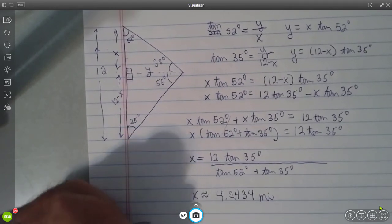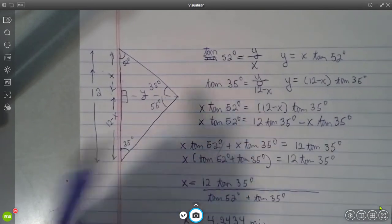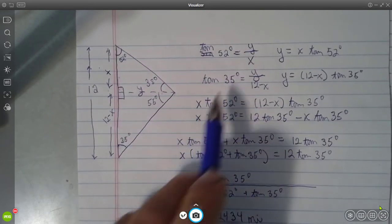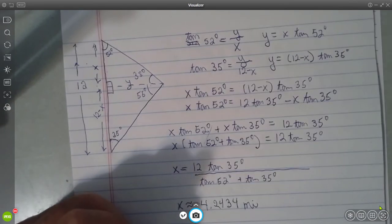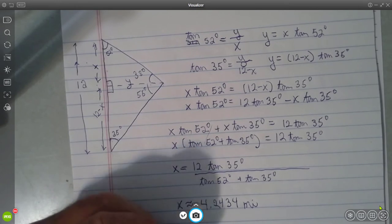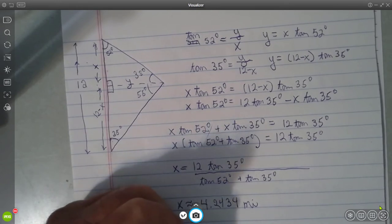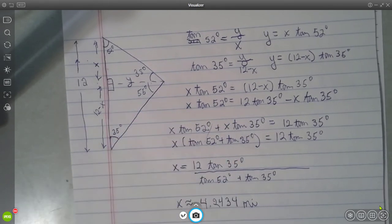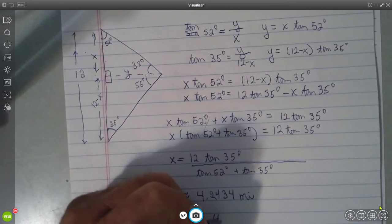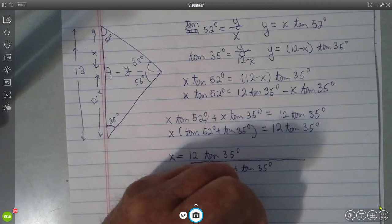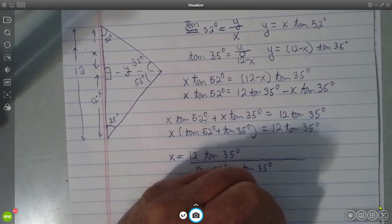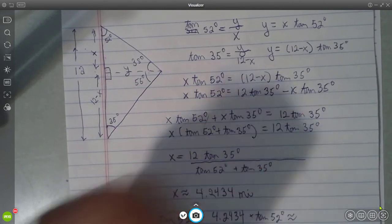Well, how about this y? We know that y is equal to, we could pick it off from right here. It's x times the tangent of 52 degrees. x, we've just computed, 4.2434 miles times the tangent of 52 degrees, and now we're going to have y.